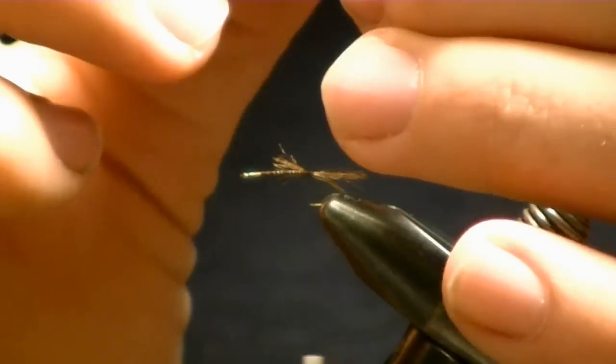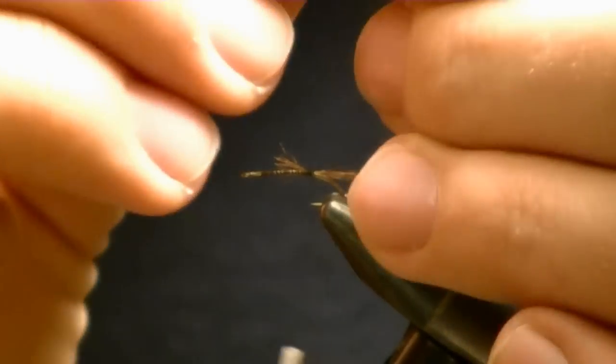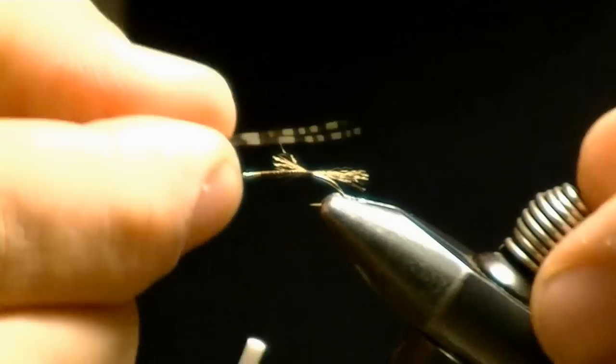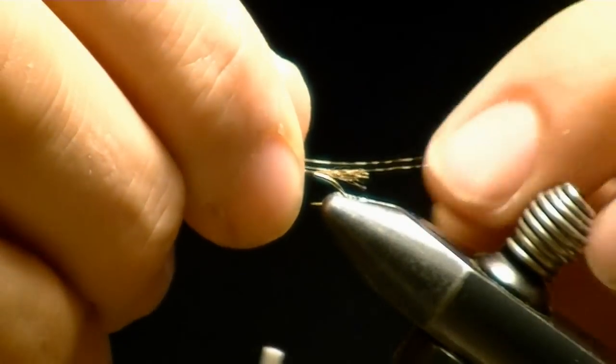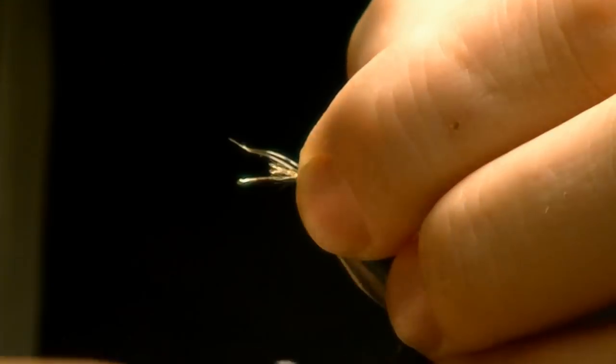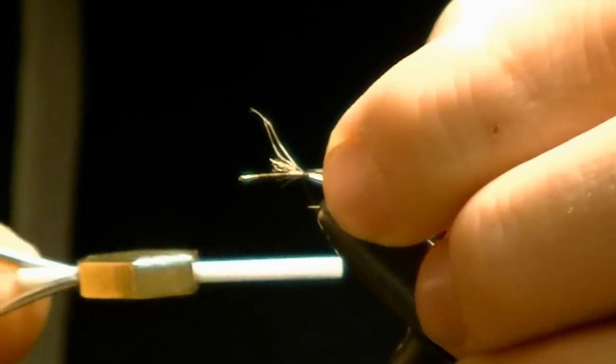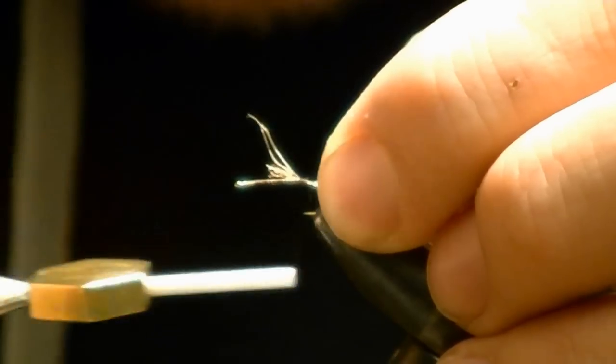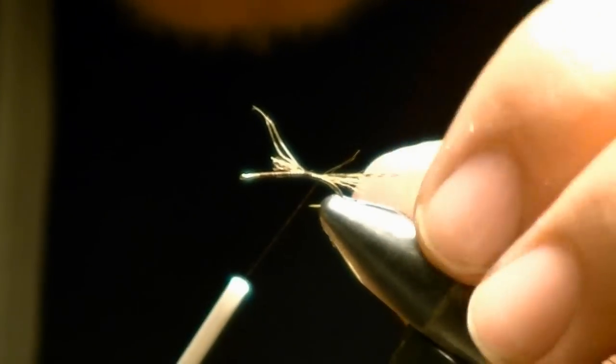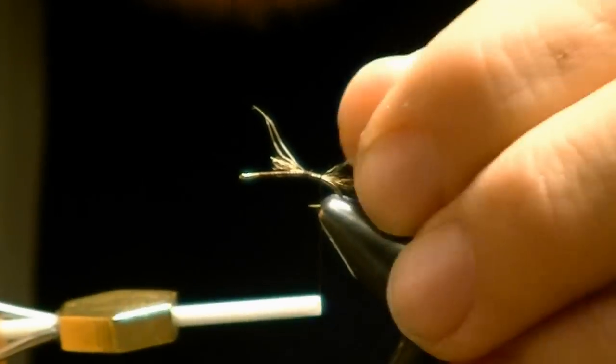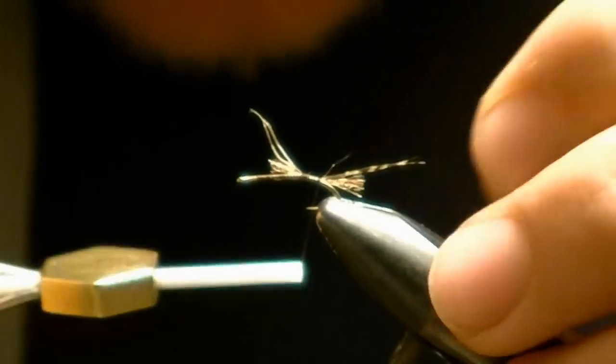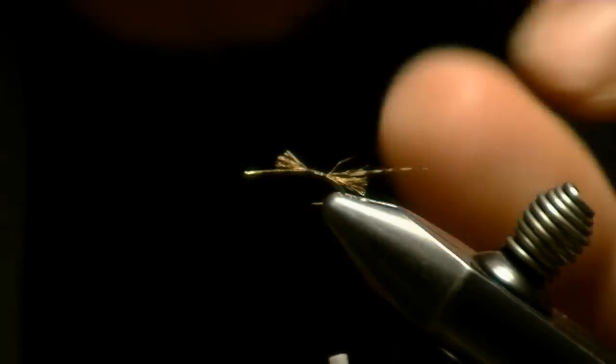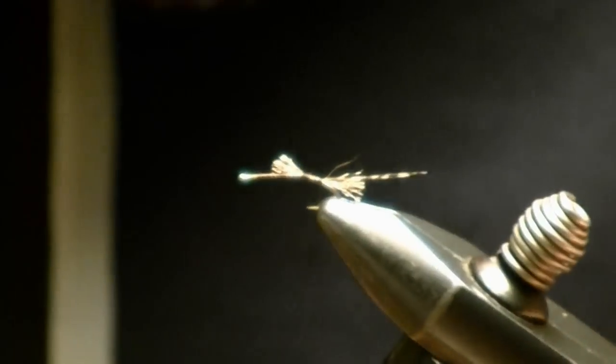I'm going to take my two partridge fibers, separate them, and tie them off extending past my own trim down. I'm just going to wrap it all back.